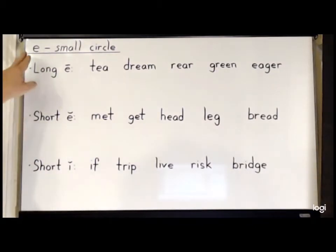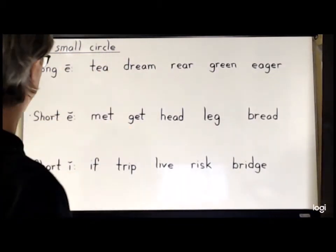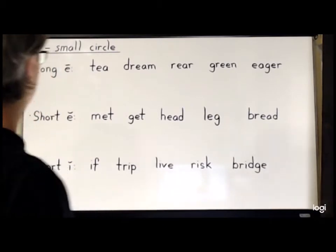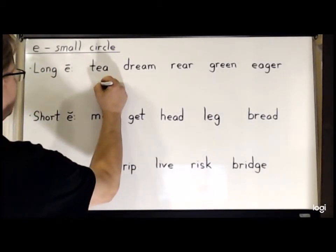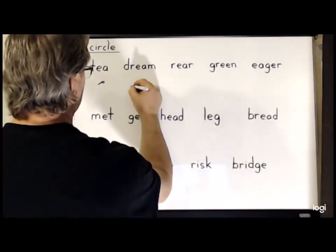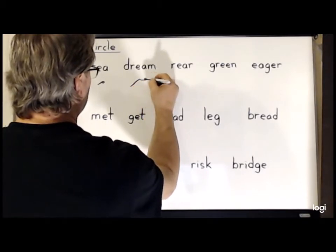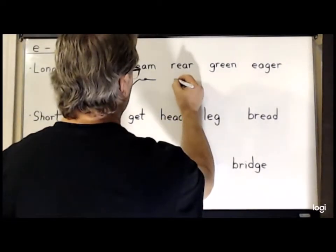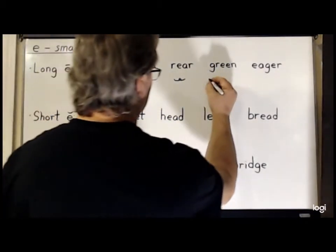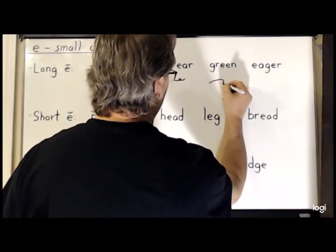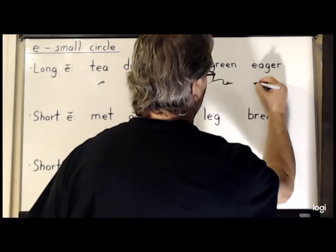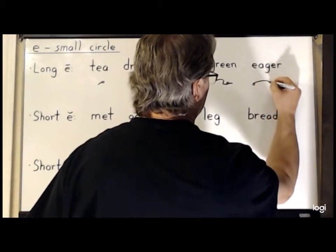Next is the E, which is represented by the small circle. We will begin with the long E. So the word 'tea' is just T with a small circle for the E. For 'dream', D-R-E-M. For 'rear', R-E-R. For 'green', it will be G-R-E-M. And lastly, 'eager': the small circle for the E, the G, and the R.